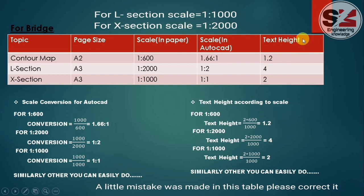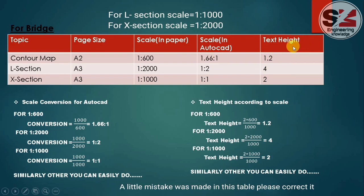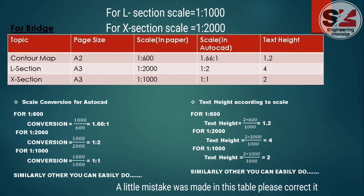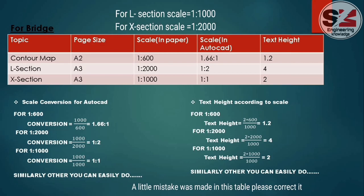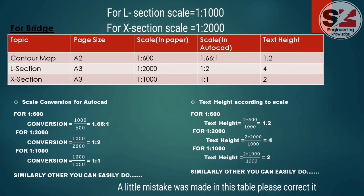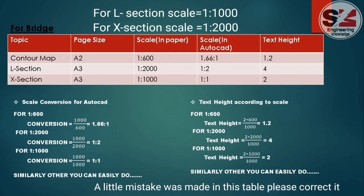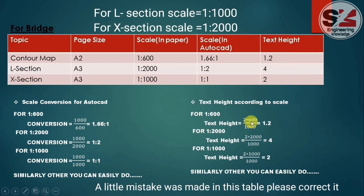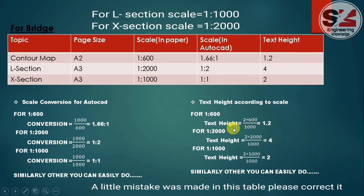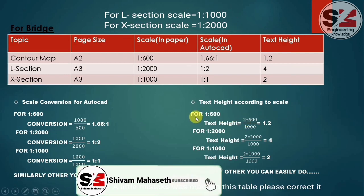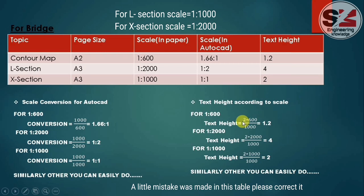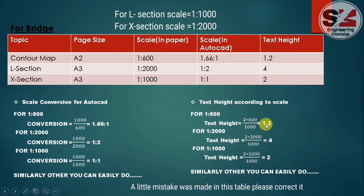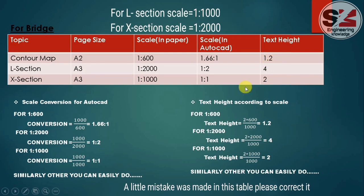After that we have to set the text height, and the text height will completely depend upon the scale. I have made a previous video about scale and text height. The formula for text height is: text height equals 2 multiplied by scale divided by 1000. For 1:600, we calculate 2 × 600 / 1000 and get 1.2, which is shown in this table.